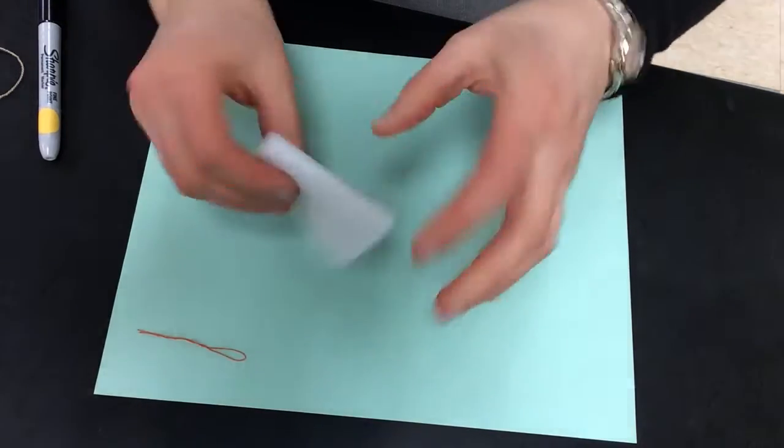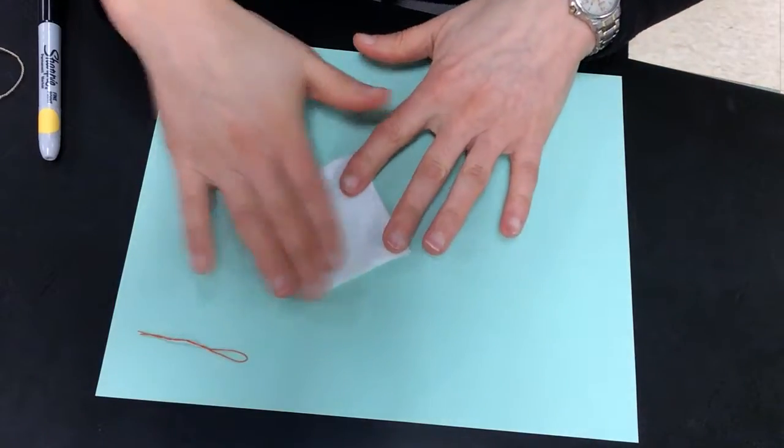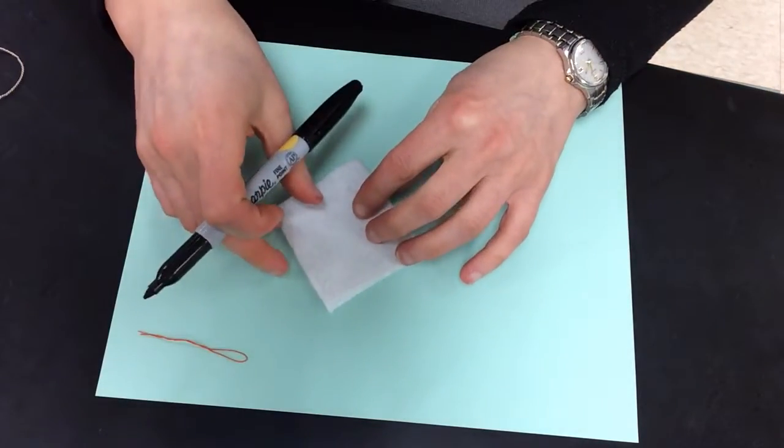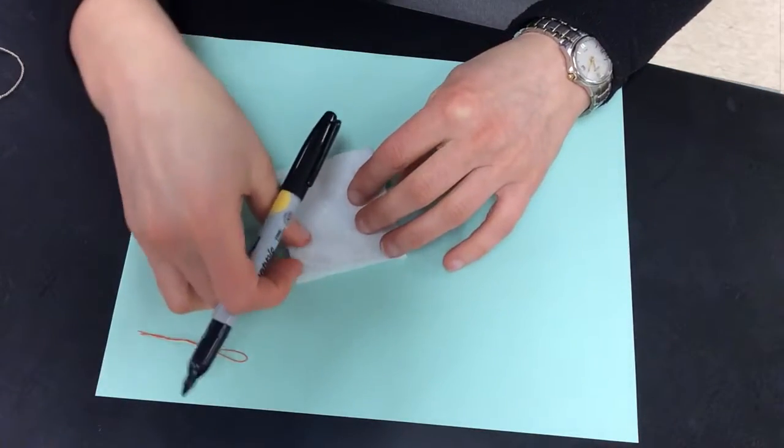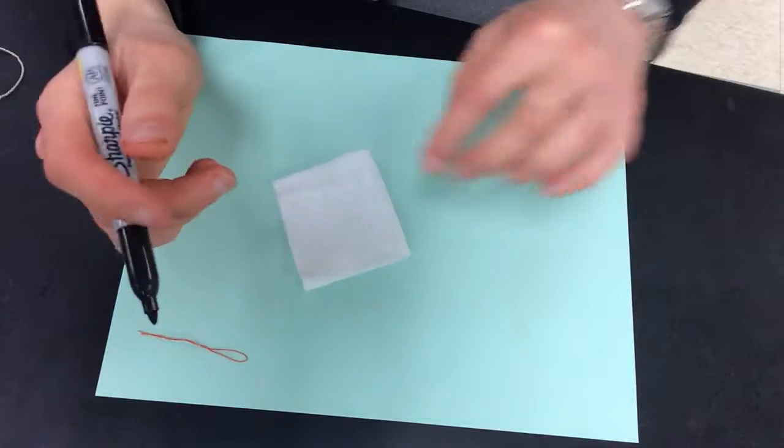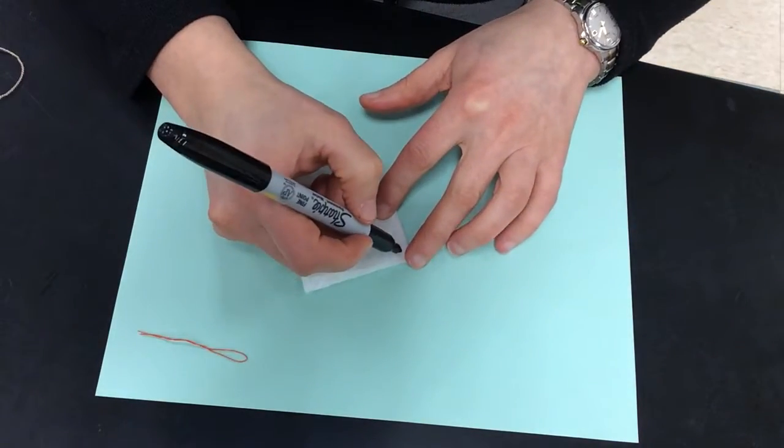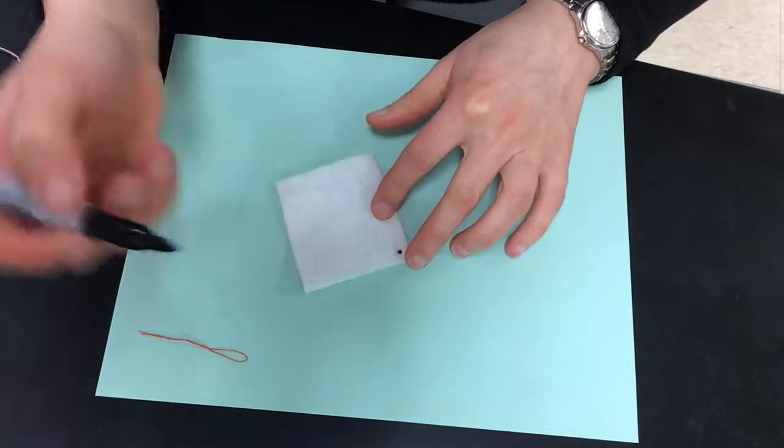Now what I find to help is to mark where I'm going to sew, especially if you've not done much sewing before. This is very helpful. So what I'm going to do is I'm going to start in one of the corners and put a dot there.